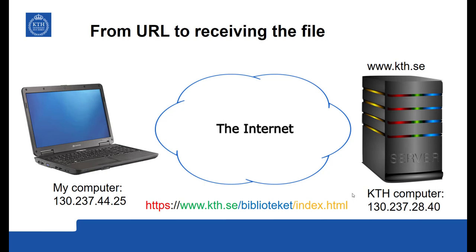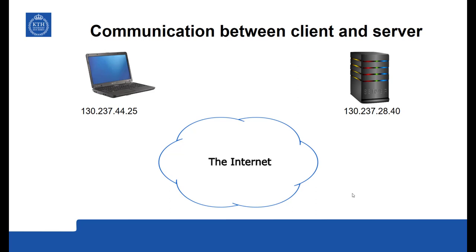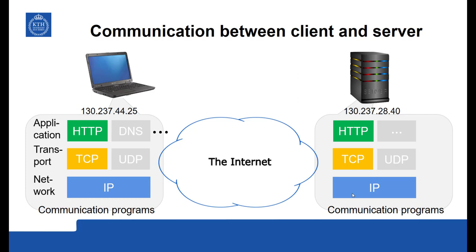Now the client computer can make a connection to the server with HTTP (secured) to get the requested page, and the server will respond with that page. The communication between the client and the server is supported by a great many communication programs. We refer to these as protocols, organized in layers on top of the applications. We have HTTP to get web pages, DNS to get IP addresses given computer names, transport protocols TCP and UDP, and the internet protocol to carry data from one addressed computer to another.